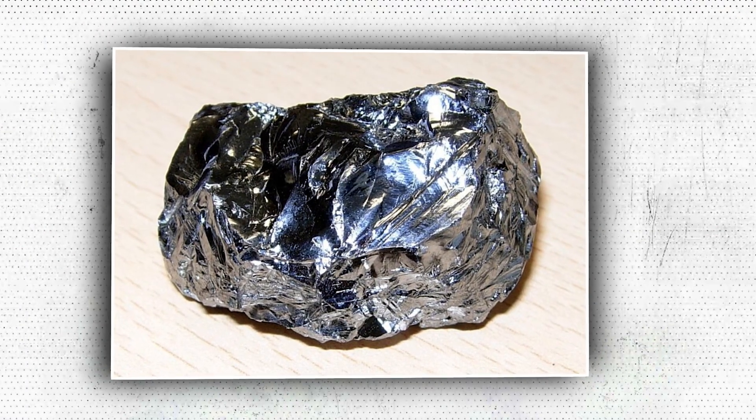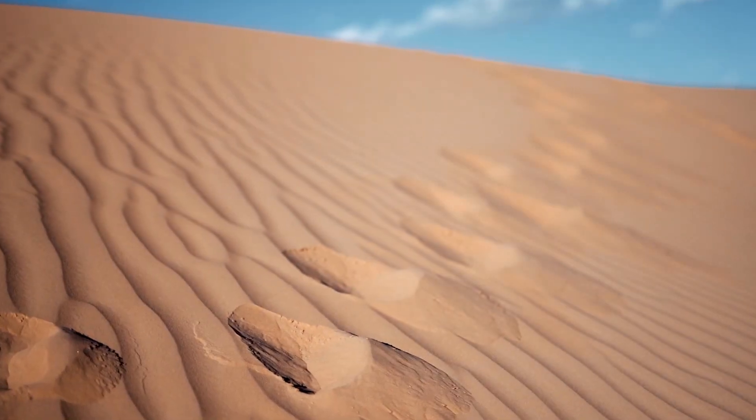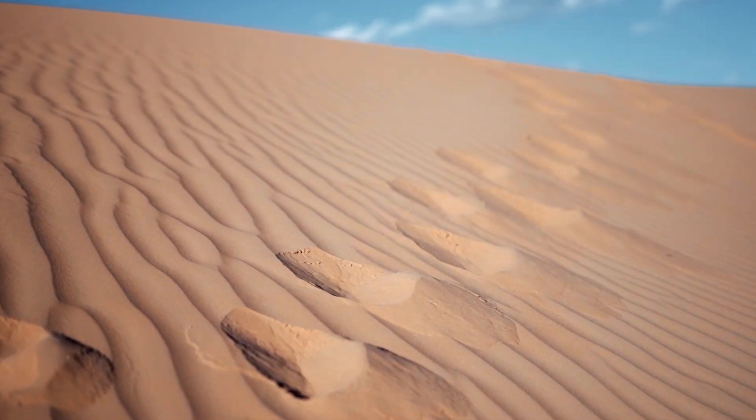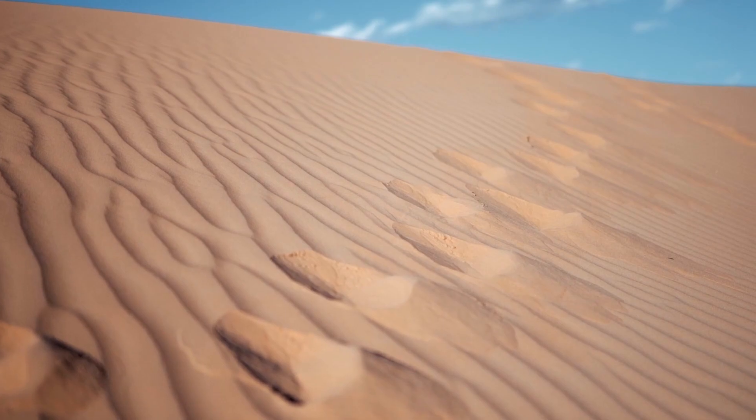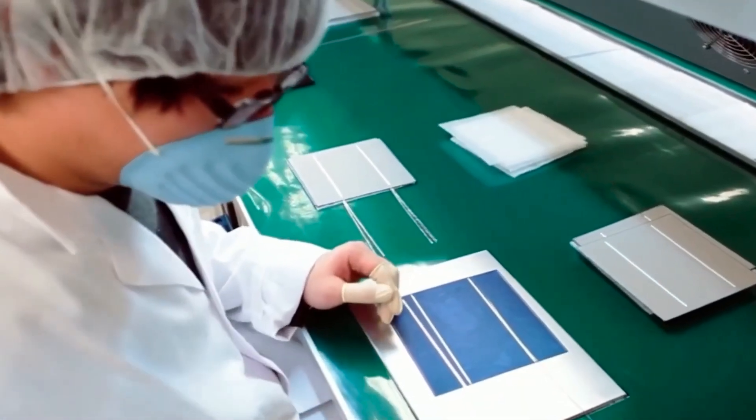Silicon, the main component of solar panels, is derived from sand. Sand gets everywhere and is gritty, abrasive, and annoying. It is also a crucial component of solar panels.